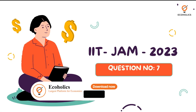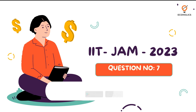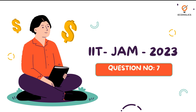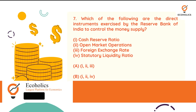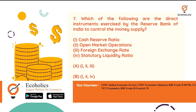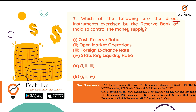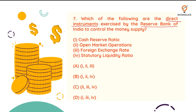Hello everyone, welcome to Ecoholics YouTube channel. In today's video we would be discussing a previous year question from the IIT JAM exam which was conducted in 2023. The question number is 7: which of the following are the direct instruments exercised by the Reserve Bank of India to control the money supply?